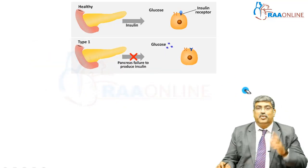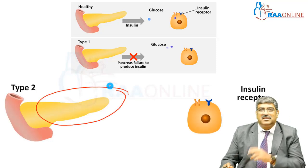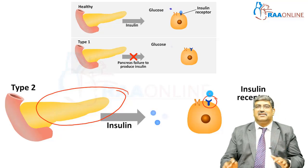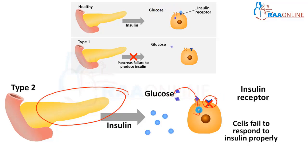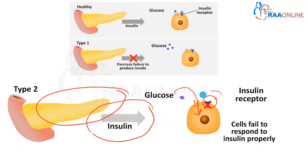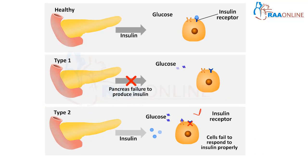Coming to type 2, here the pancreas produces the insulin, but the receptors are resistant or the insulin production is on the lower side. Therefore, the glucose cannot go inside the cell for utilization. Either it produces insulin which cannot match the sugar which is produced, or there might be peripheral resistance to the insulin receptor. This is type 2.